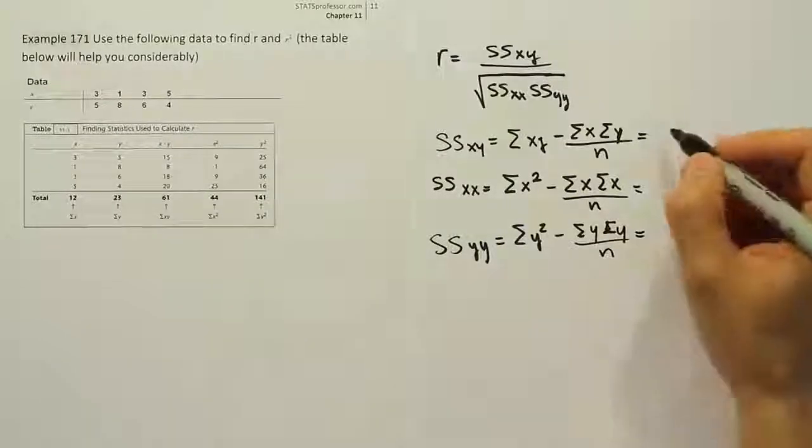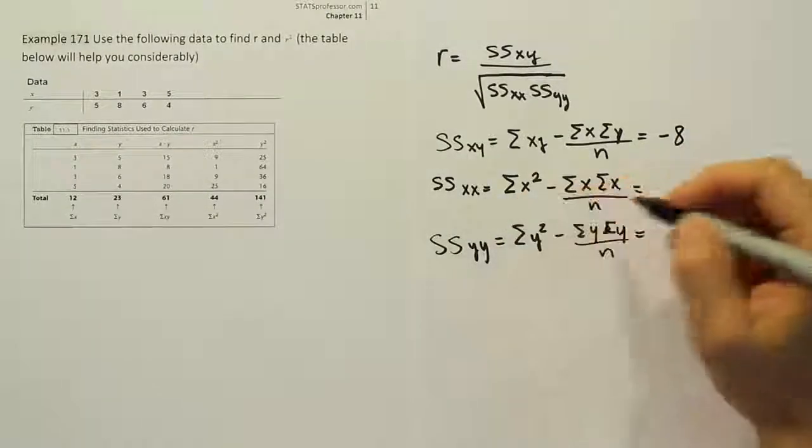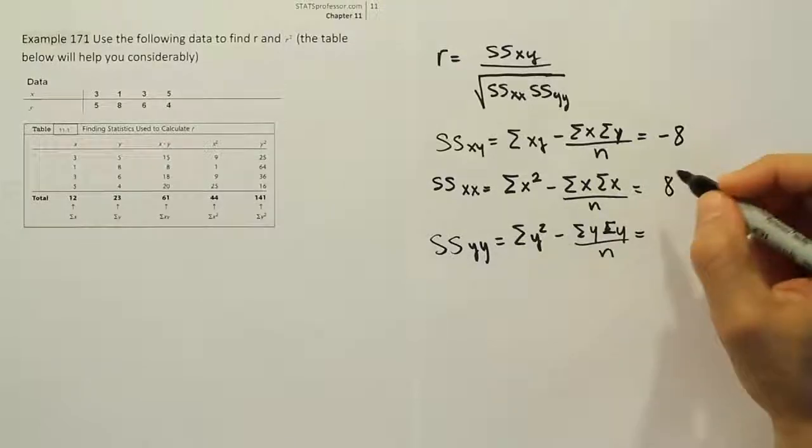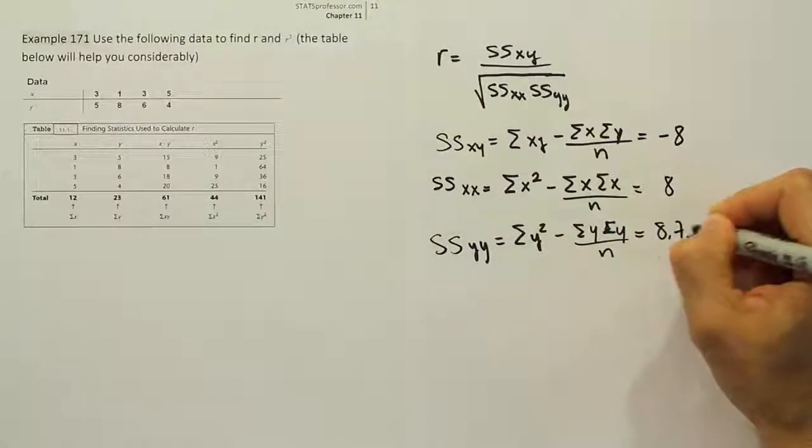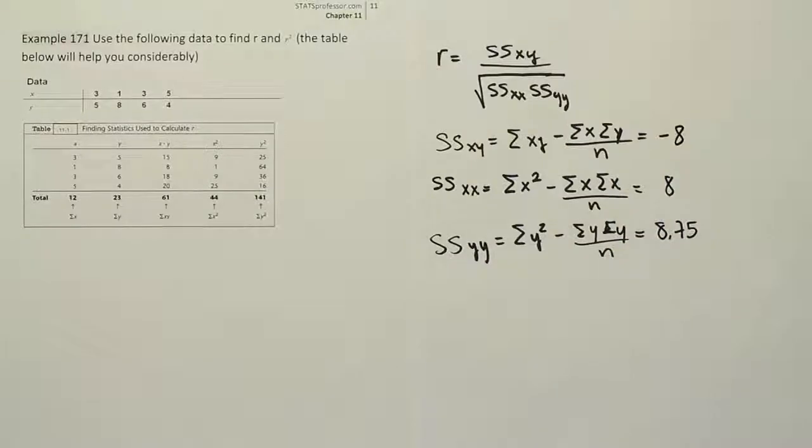For the xy value, we get negative 8. For the xx value, we get positive 8. And for the yy value, we get 8.75. So now that we have that done, the last thing we want to do is enter those numbers into r.